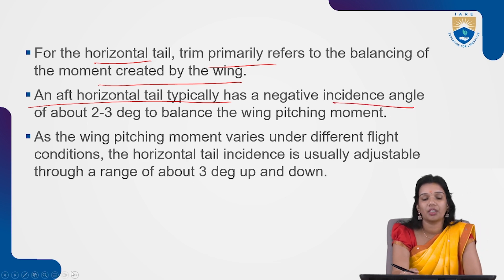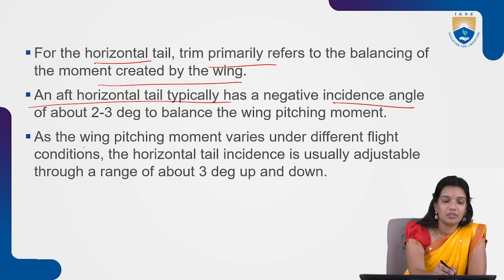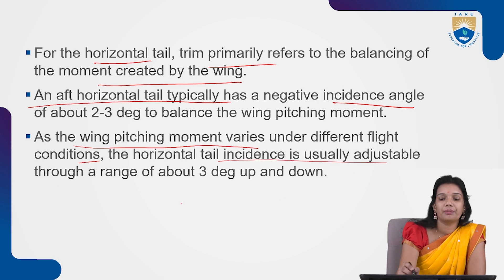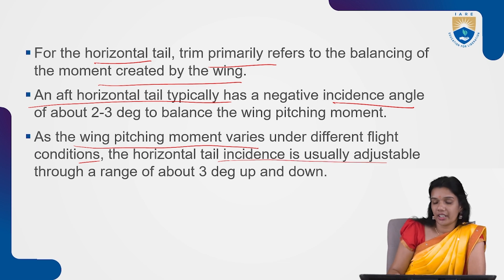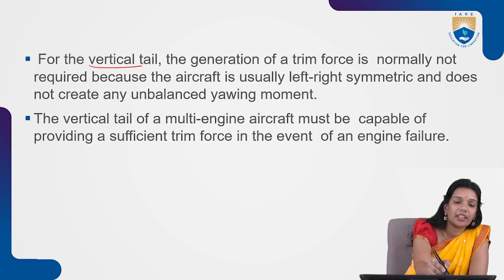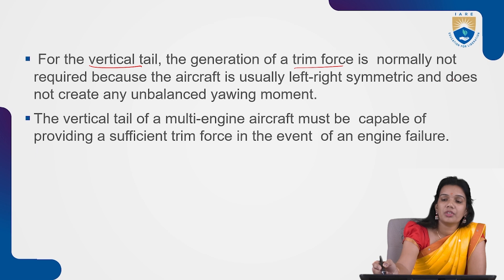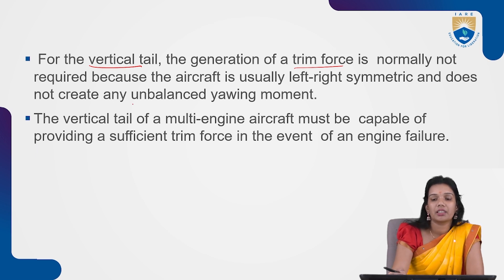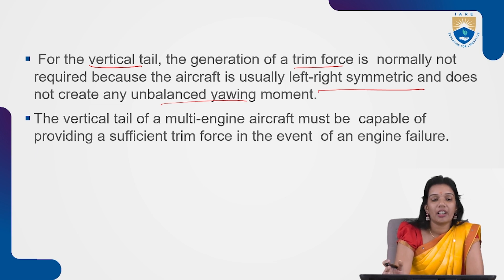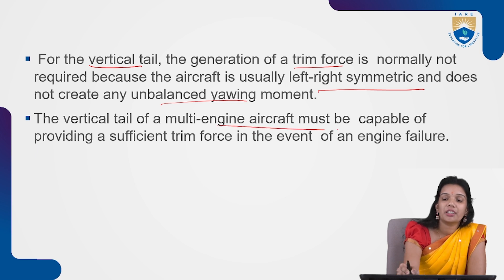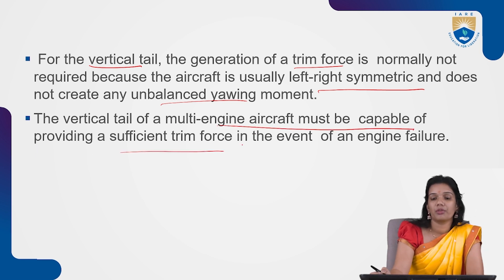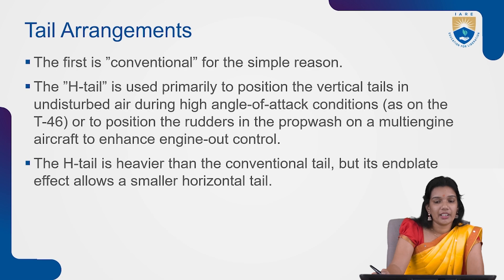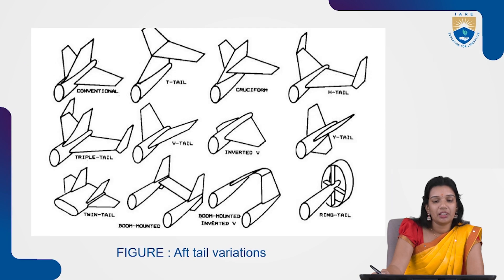As the wing's pitching moment varies under different flight conditions, the horizontal tail incidence is usually adjustable by about three degrees up and down. For a vertical tail, generation of trim force is normally not required since the aircraft is laterally symmetric and creates no lateral moment under symmetric flight. However, on a multi-engine aircraft, the vertical tail must provide sufficient trim force in the case of an engine failure.